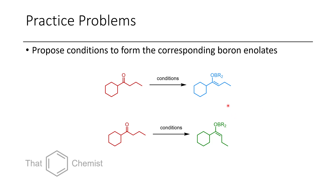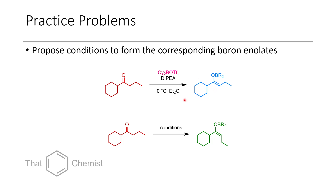In the first set of problems, I asked you to show what conditions would afford the corresponding boron enolates. In the top case, we would have to use dicyclohexyl boron triflate and diisopropyl ethylamine to afford this product. However, you could have also used the 9-BBN-derived boron chloride, and that would also give you a Z-enolate product.